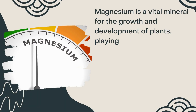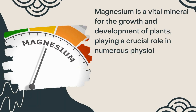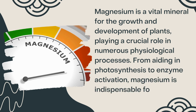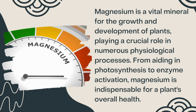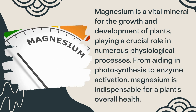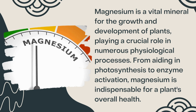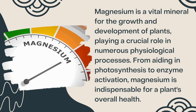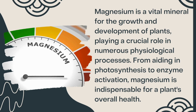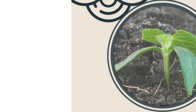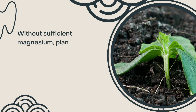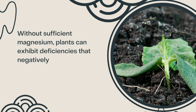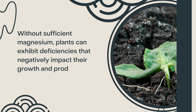Magnesium is a vital mineral for the growth and development of plants, playing a crucial role in numerous physiological processes. From aiding in photosynthesis to enzyme activation, magnesium is indispensable for a plant's overall health. Without sufficient magnesium, plants can exhibit deficiencies that negatively impact their growth and productivity.